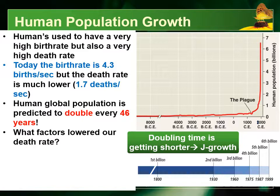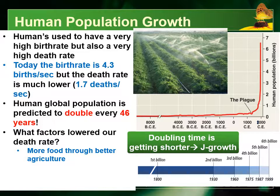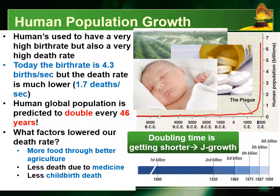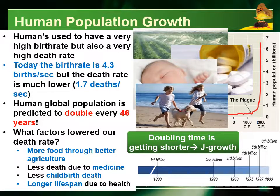What has allowed our birth rate to stay high while lowering the death rate? Things like having more food — removing food as a limiting factor — increasing medicine supply, decreasing childbirth deaths, and extending lifespan overall. By limiting the effects of these factors on our death rate while continuing to reproduce consistently, we've had a dramatic effect on increasing the global population. Hopefully this was clear — if you have any questions, ask me, and use your notes and revision packet to prepare for your tests.